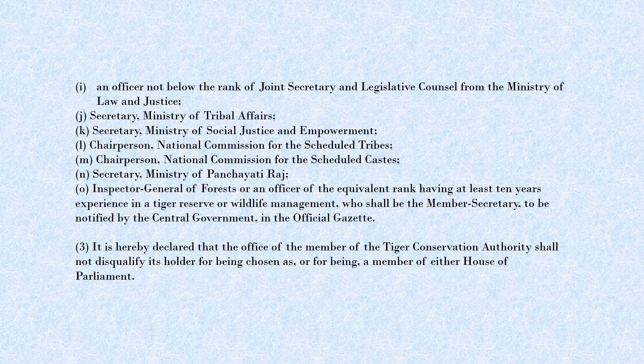The Secretary of Ministry of Social Justice and Empowerment is also a member, as are the Chairperson of the National Commission for Scheduled Tribes, the Chairperson of the National Commission for Scheduled Castes, the Secretary of Ministry of Panchayati Raj, and the Inspector General of Forests. The office of the Tiger Conservation Authority cannot disqualify any member chosen directly by the government or from Parliament.